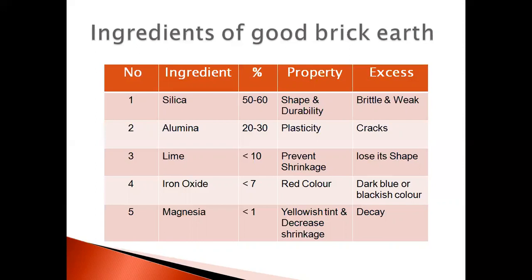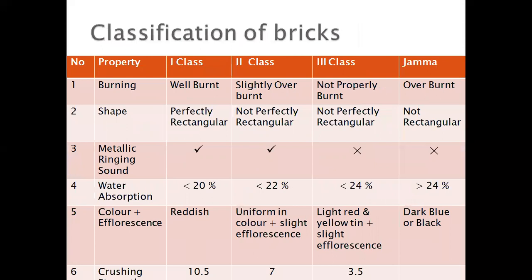If you use excess magnesia, it can decay the brick. So these are the 5 ingredients: silica 60%, alumina 20%, and other ingredients — lime, iron oxide, and magnesia — making up 20%. Next, we will see the classification of bricks, which is an important topic. There are four classifications: first class, second class, third class brick, and the fourth is known as jamma bricks or overburnt bricks. The properties we consider are: burning, shape, metallic ringing sound, water absorption, color, efflorescence, and crushing strength.